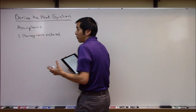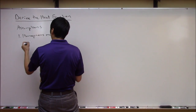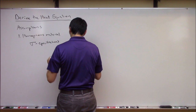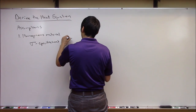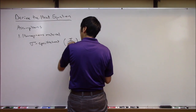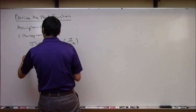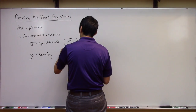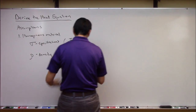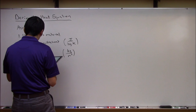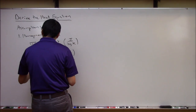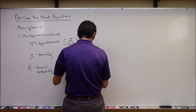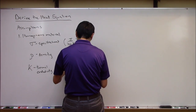This means that a lot of the physical properties of this material are constant. Namely, sigma — the specific heat of the material — is in units of joules per kilogram Kelvin and is constant. Let's also assume that the density rho is constant, with units of kilograms per meter cubed.